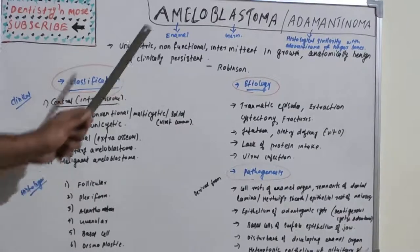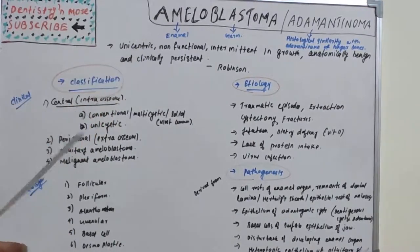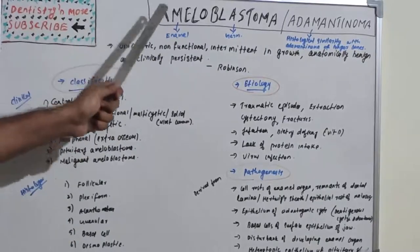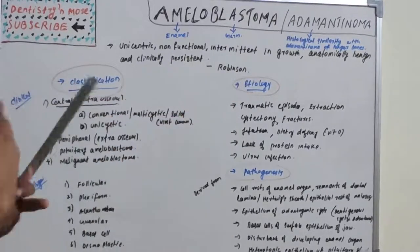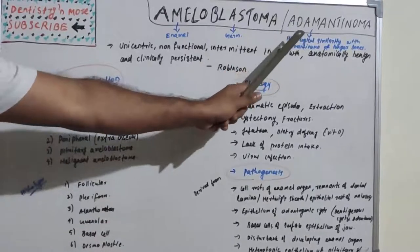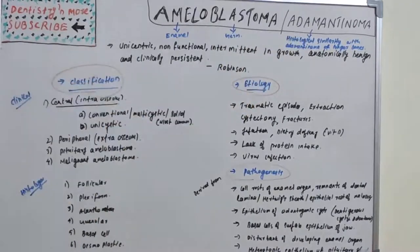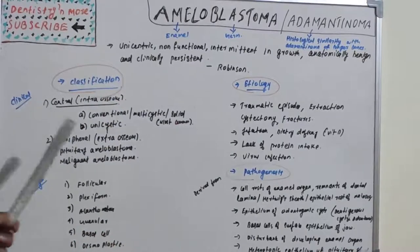From the name itself we get an idea about the tumor. 'Amelo' refers to ameloblast, which is related to enamel, and 'blasto' means germ — so it originates from enamel tissues. Another name is adamantinoma, because of the histological similarity between ameloblastoma and adamantinoma of longer bones. So it got two names: ameloblastoma and adamantinoma.